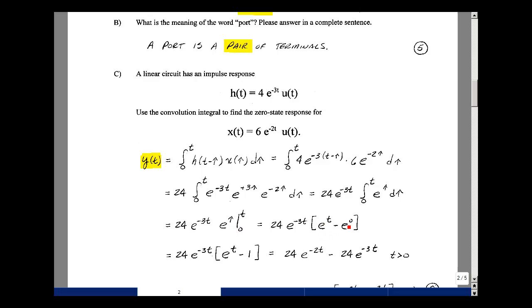So e^t minus e^0, e^0 is 1, so then I have 24 times e^(-3t) times e^t. I'm just going to add the exponents, so I get e^(-2t), and then multiplying this times minus 1, I get minus 24 e^(-3t), and that's true for t greater than 0.